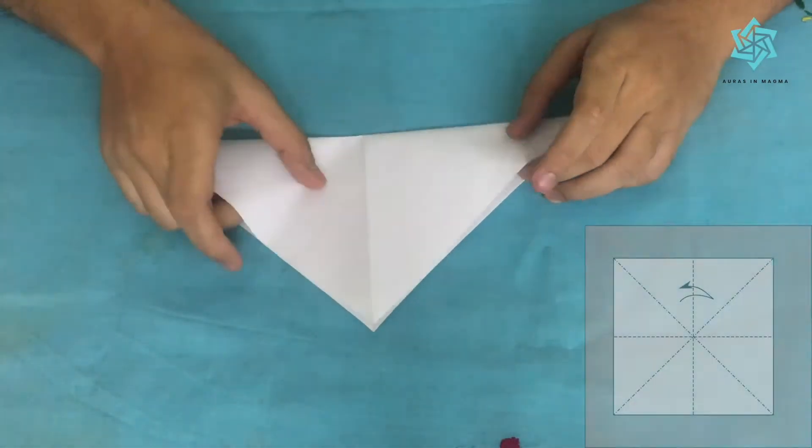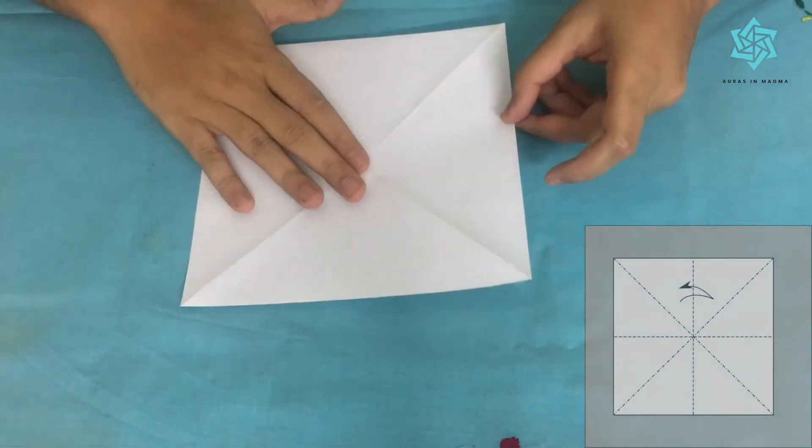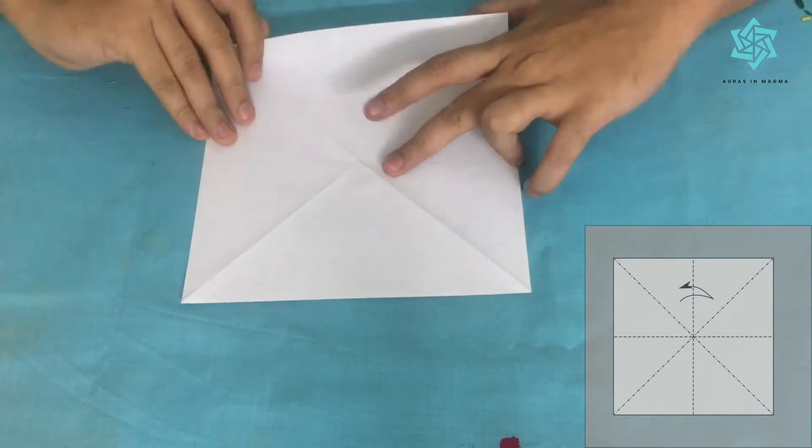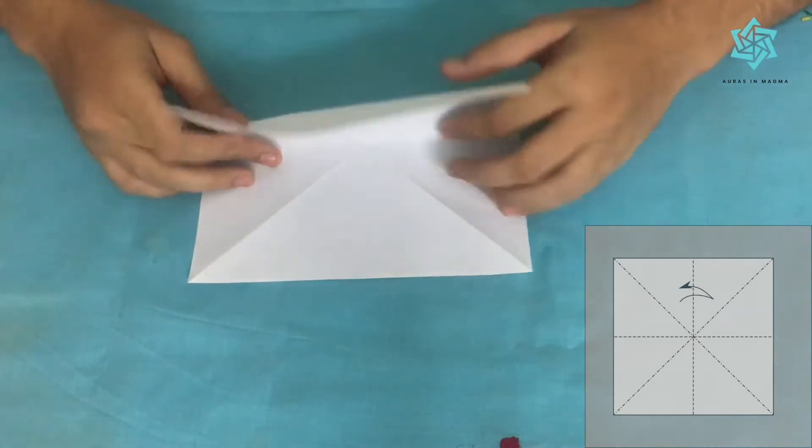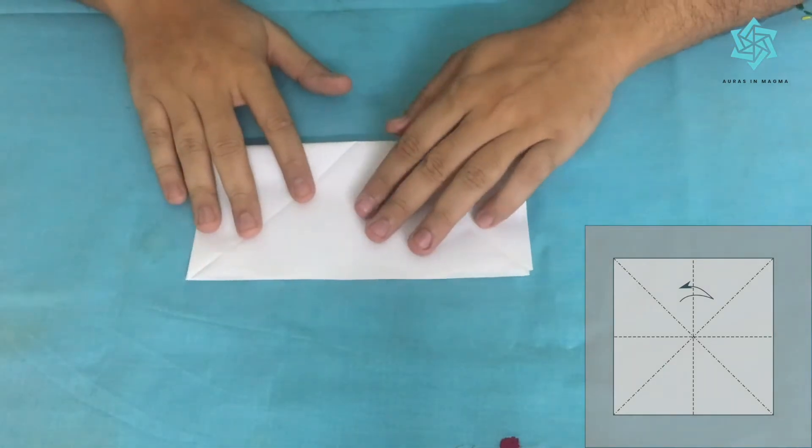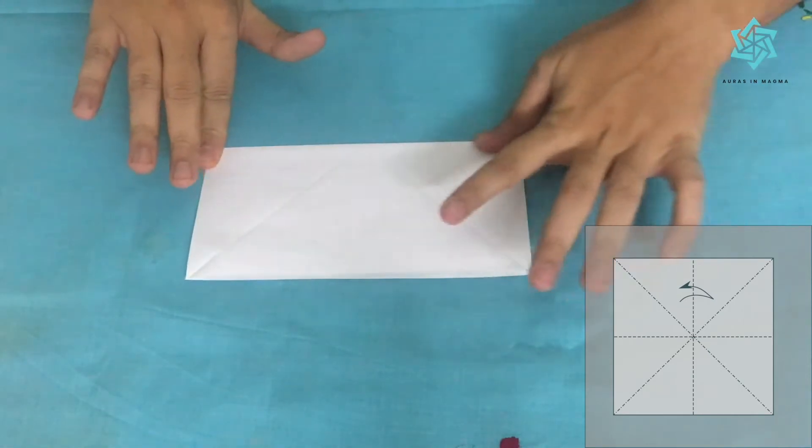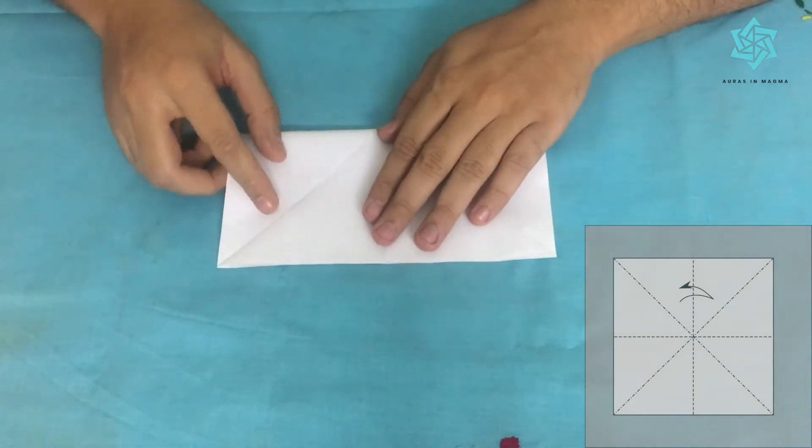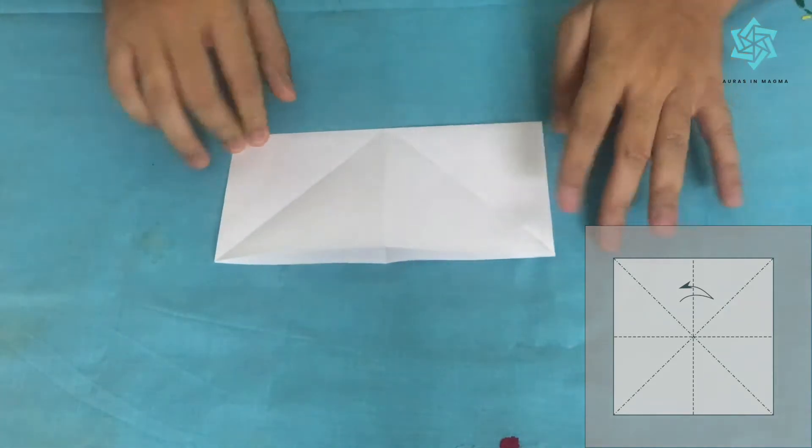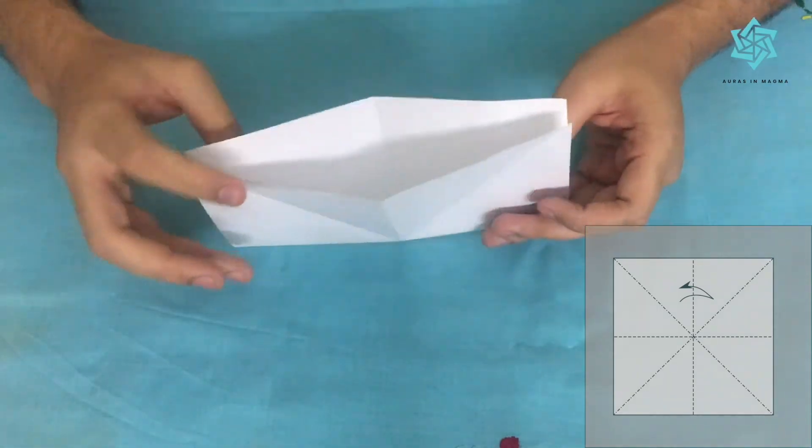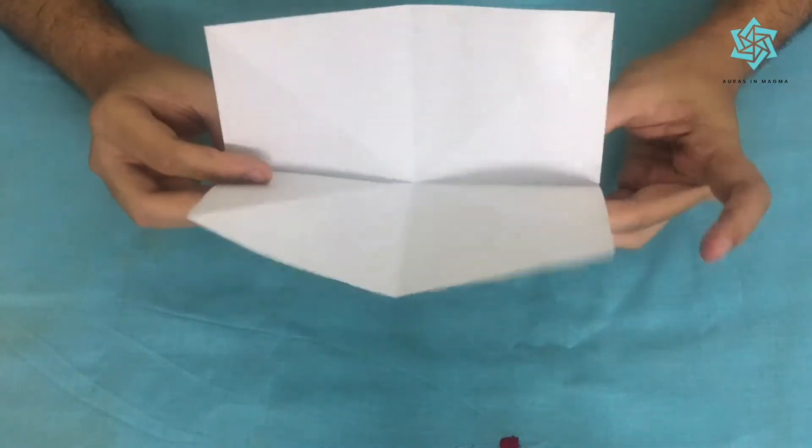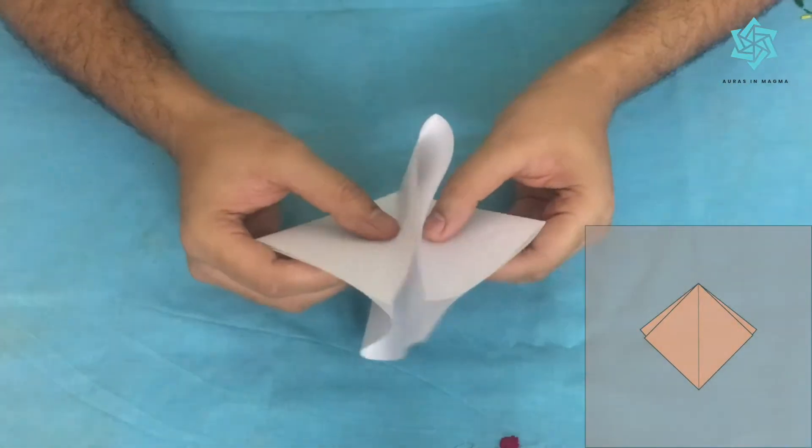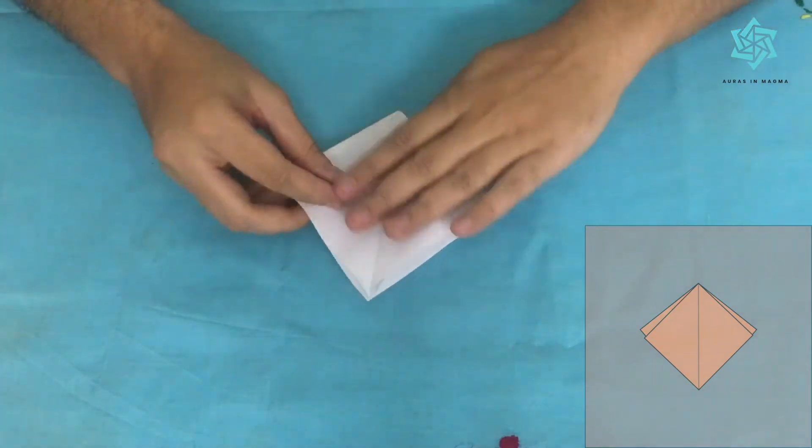Now to make the bird base, since we have folded in this direction, we'll have to turn it around in the other direction. Now we have to make a plus over here. We'll fold the paper in half by putting this edge on top of the edge which is opposite to it, and same in the other direction.